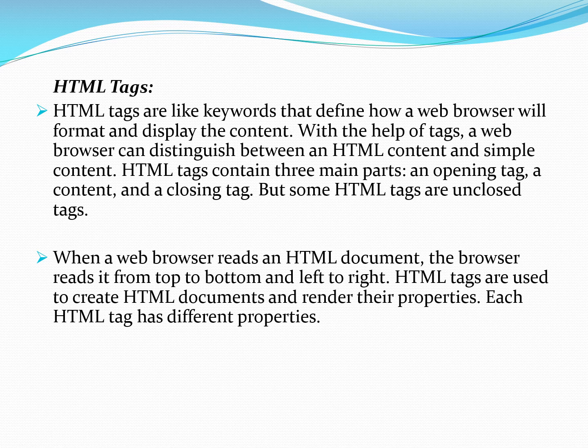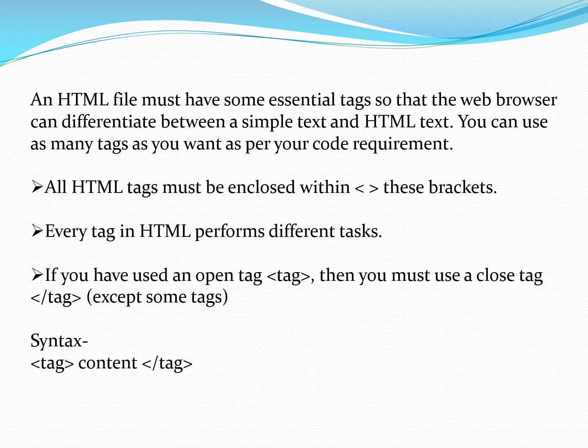There are some tags in HTML that are self-closing — we don't need to close them, and we will see those in later classes. When a web browser reads an HTML document, it reads from top to bottom and left to right. Tags tell the computer what should be displayed, and each HTML tag has different properties. HTML tags are always written in angular brackets. There are two types: opening and closing. You open the tag, put information inside, and close the tag using a forward slash.